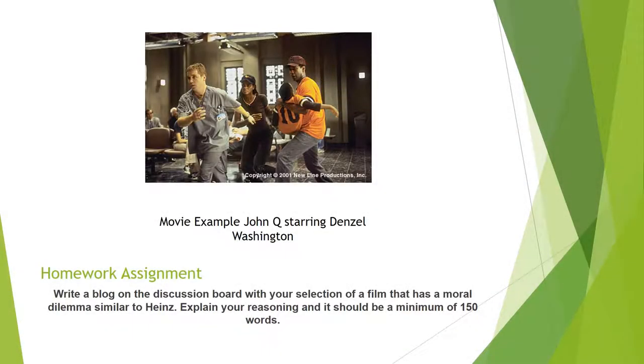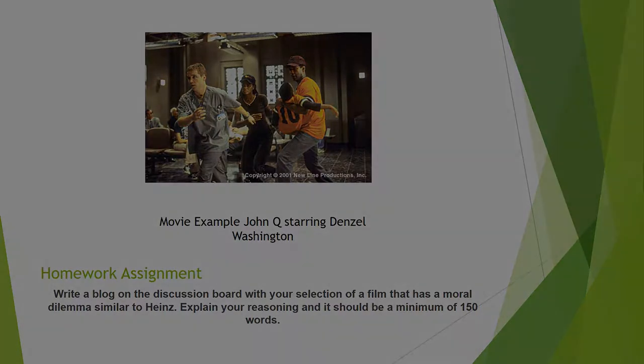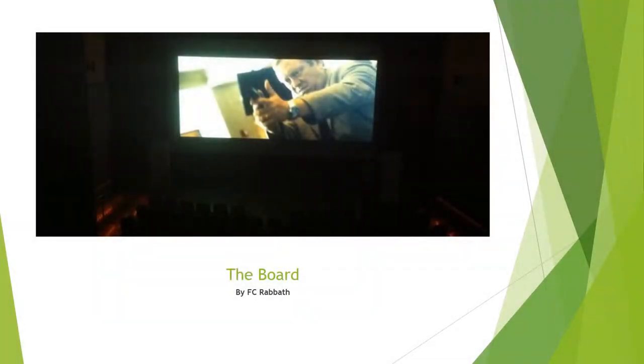This is your homework assignment. After going through these six stages with you, I want you to show me a movie example. Write it on a blog on the discussion board — a film that has a moral dilemma similar to Heinz — and explain your reasoning. It should be a minimum of 150 words. The example I have here is the wonderful Denzel Washington in the movie John Q. Recently, I was blessed to be cast in an F.C. Rabath movie called The Board, which closely aligns itself to the Heinz story. This international award-winning short film is on next. Enjoy!